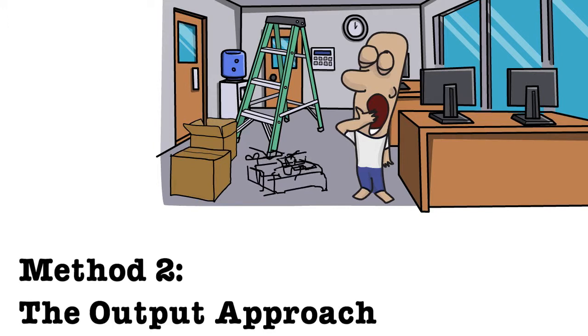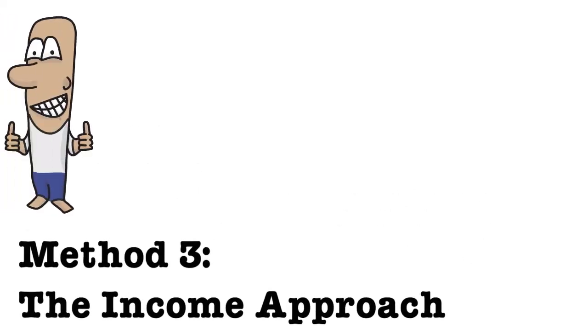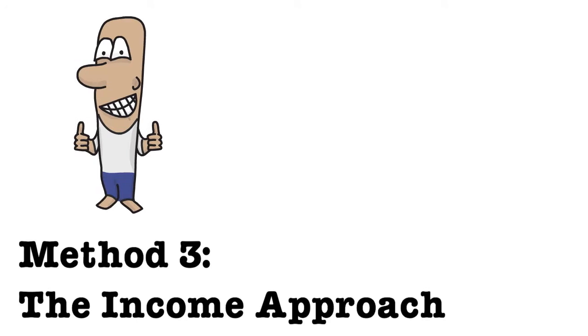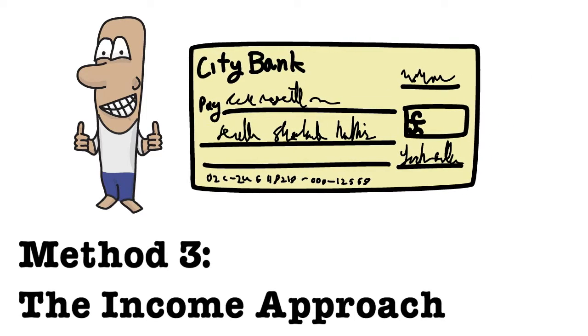Okay, our final method then, Method 3, is the income approach. Now the income approach is looking at it from a perspective of all the incomes that come from production. We have actually three of them that we're going to look at here. The most obvious one to start off with is from the employee perspective, and from the employee perspective, what we look at is the compensation of employees—in our terminology, wages. So that's going to be a key income approach factor: remuneration of employees.